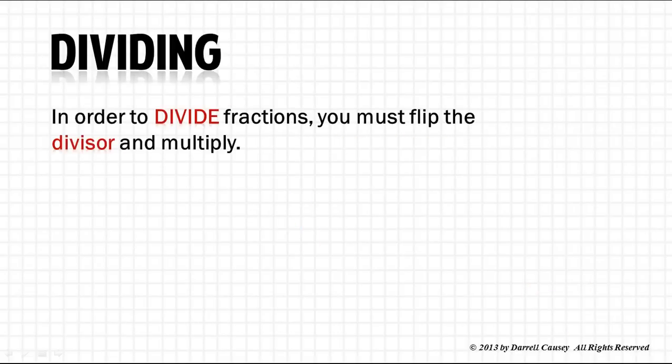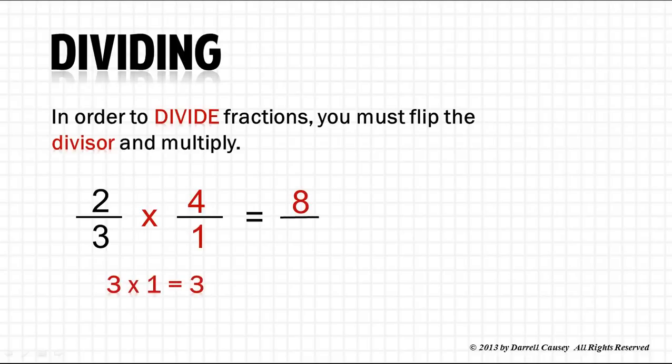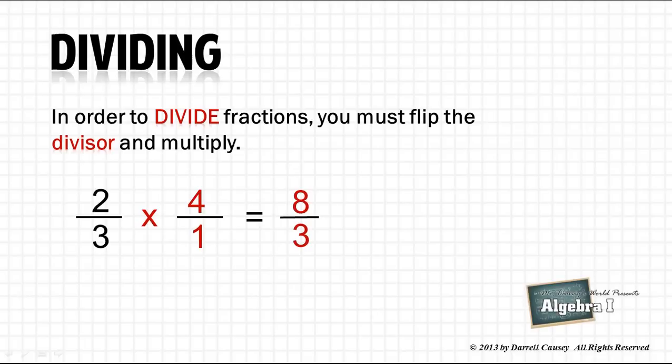Dividing fractions. In order to divide fractions, you must flip the divisor and multiply. So, two-thirds divided by one-fourth. Let's flip it over and multiply. Two times four is eight. Three times one is three, and we have eight-thirds. Again, it doesn't need to be reduced, and we don't want mixed numbers.